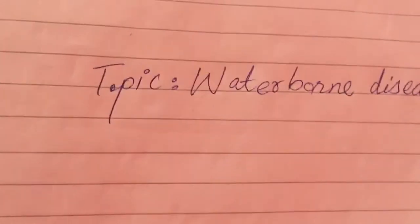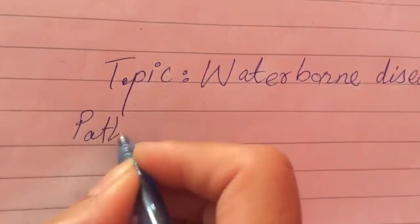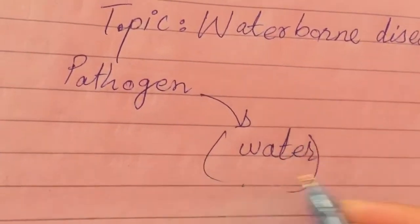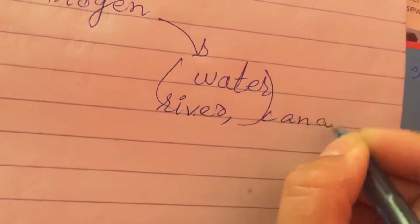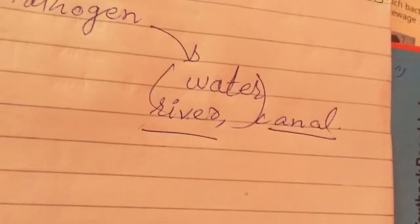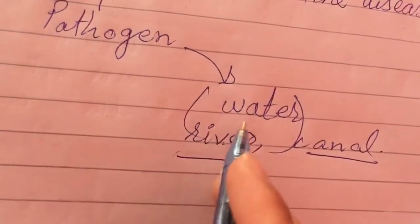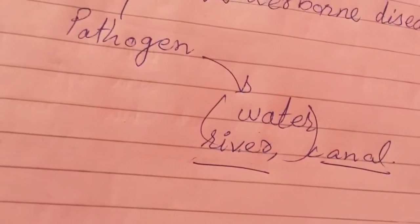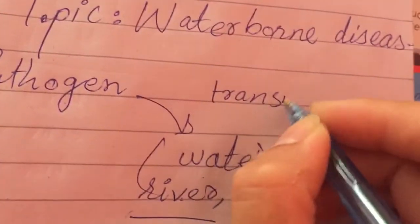Now there are also some waterborne diseases. Let's say there are some pathogens like viruses or bacteria that somehow enter your drinking water. There are many water bodies like rivers and canals — basically we are drinking canal water. Even at home it may be filtered, but we have no idea what kind of water is being given to us. So when there is a pathogen present in your drinking water and you drink that water, the pathogen will enter your body.